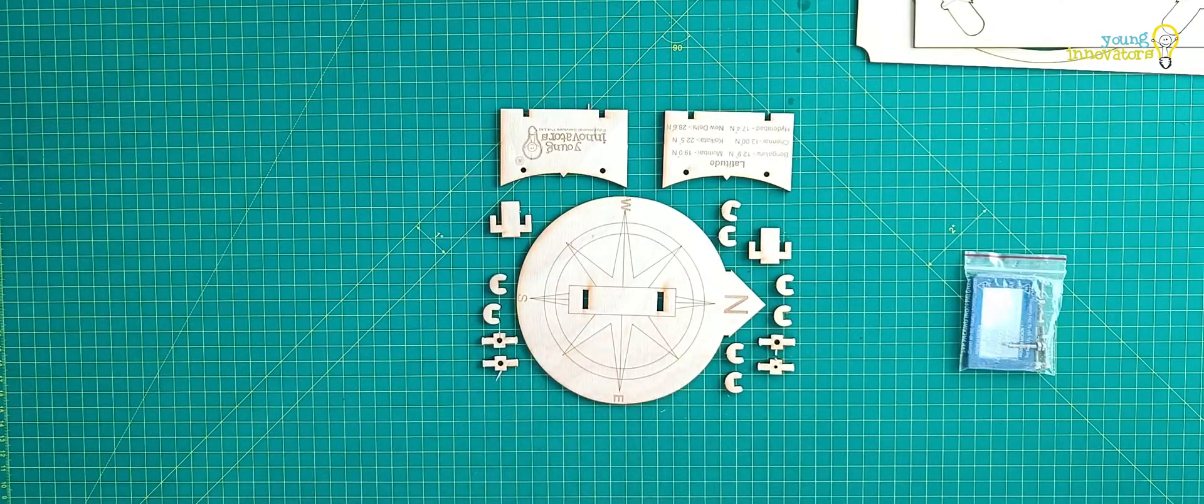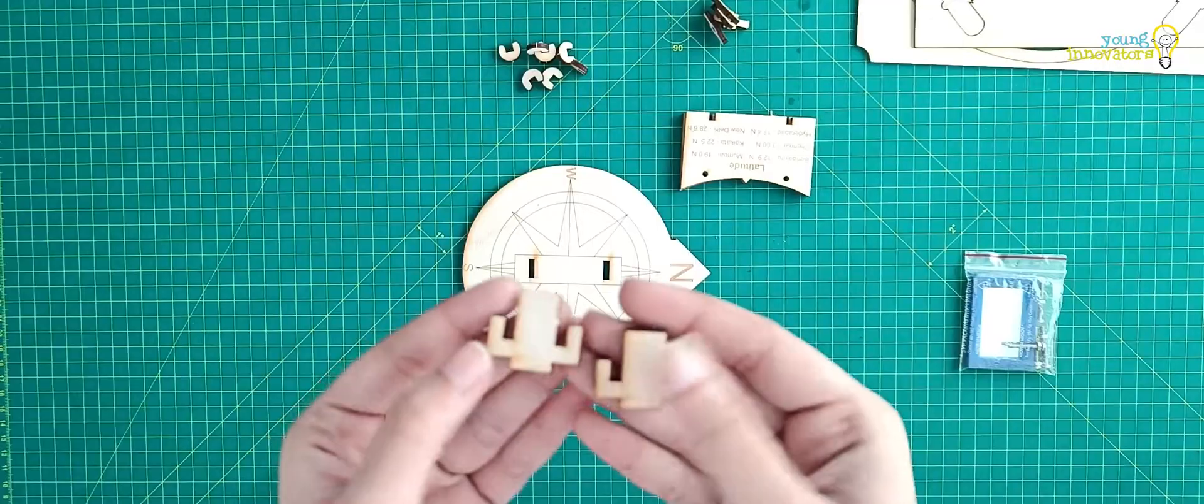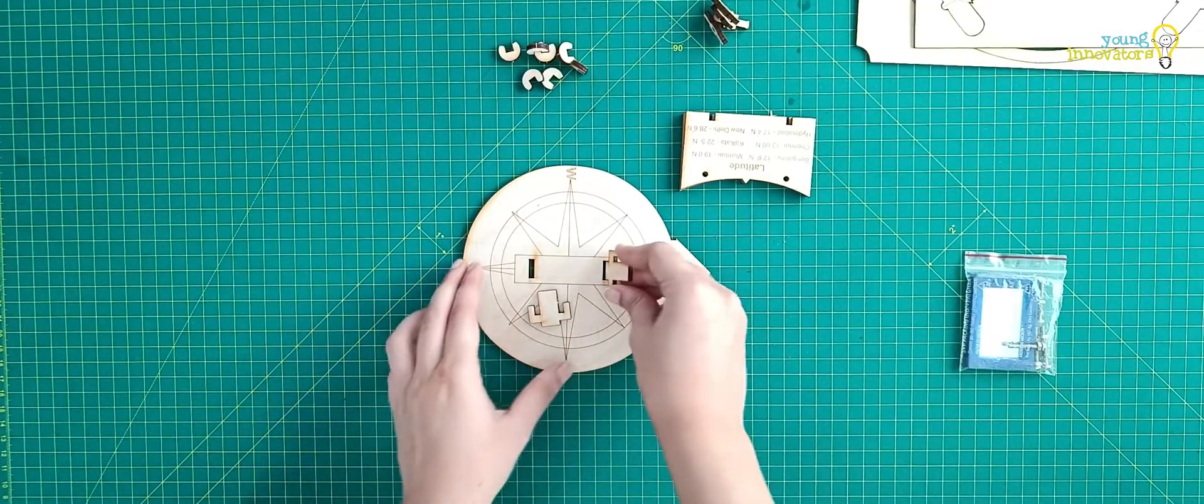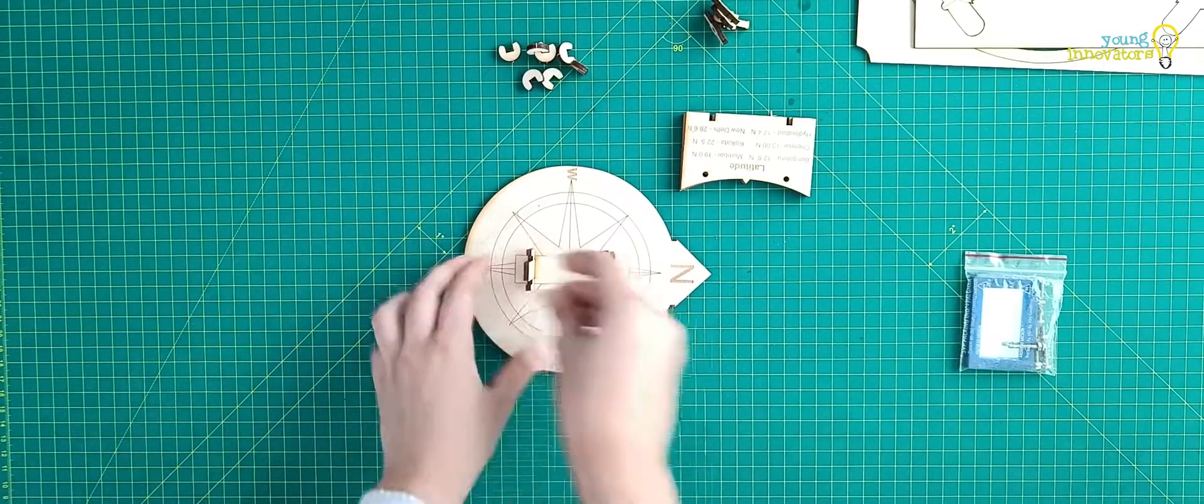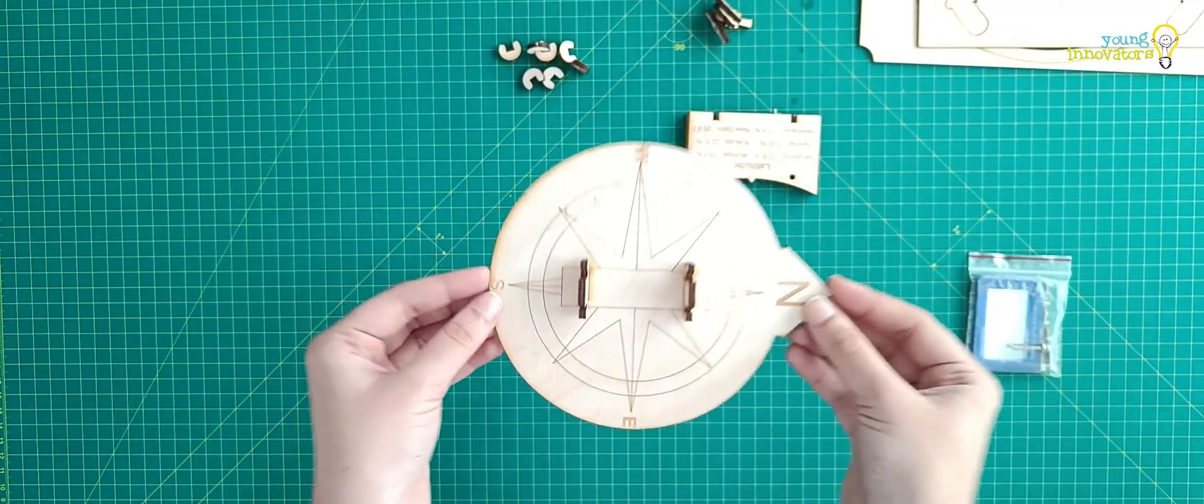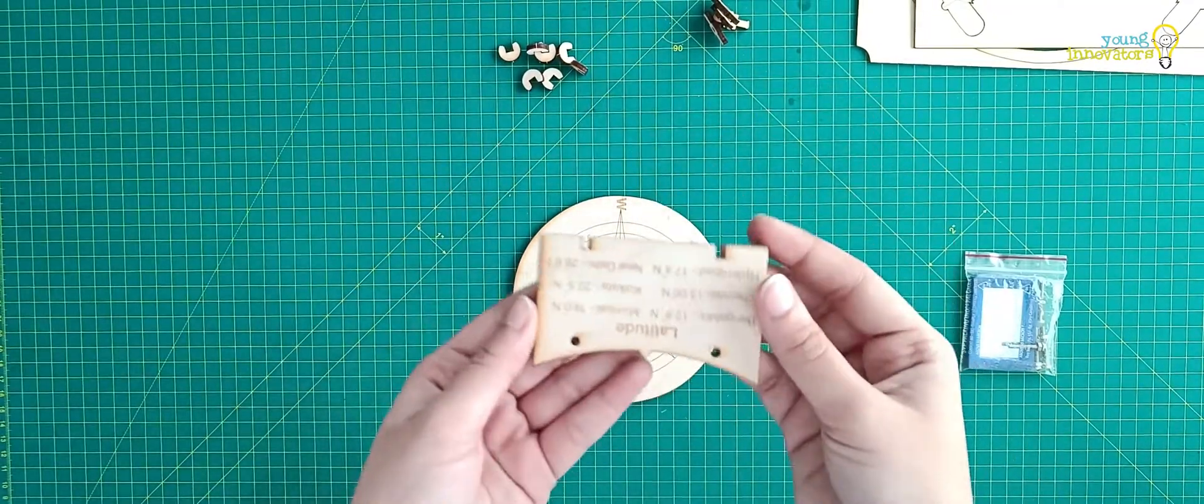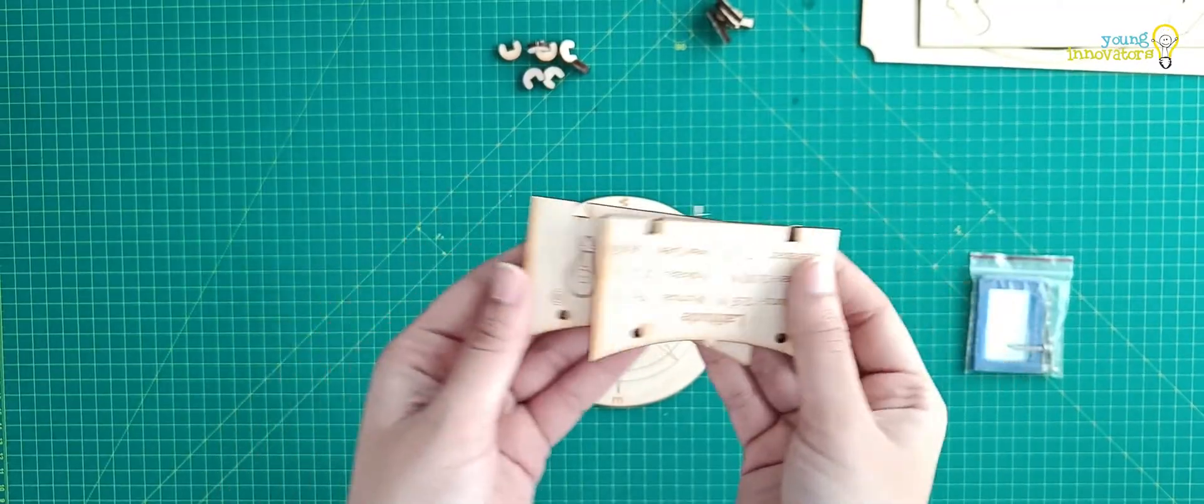Separate all the pieces from the board for assembly. Take the base plate and attach the two stands onto the board. Take the latitude stands and join these to the two stands.